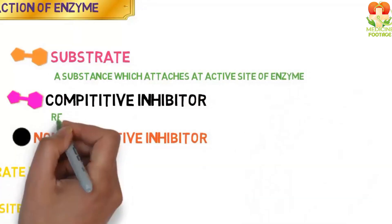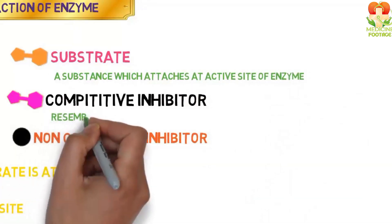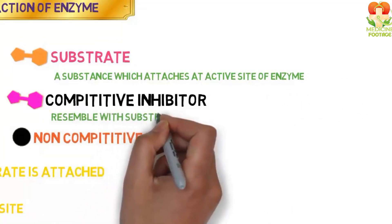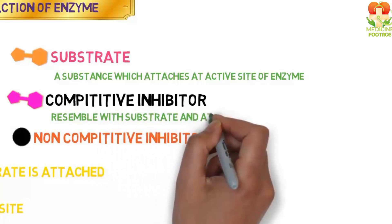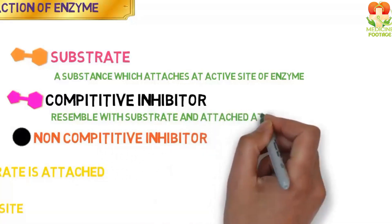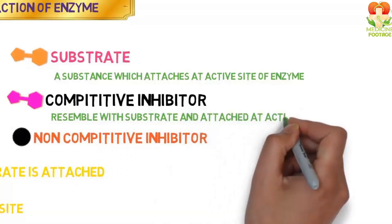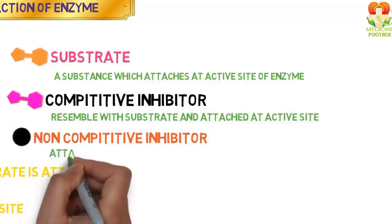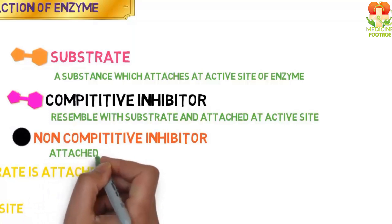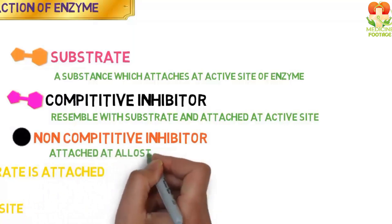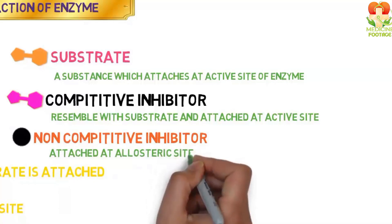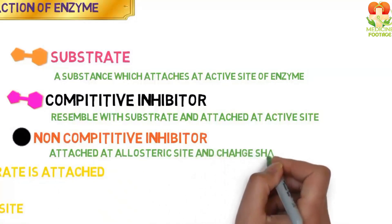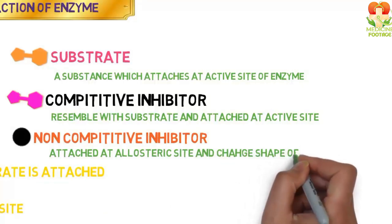What is the competitive inhibitor? The competitive inhibitor looks like the substrate. This inhibitor also binds to the enzyme's active site, stopping the enzyme's activity. What is the non-competitive inhibitor? The non-competitive inhibitor attaches to the allosteric site, which also stops the enzyme's activity.